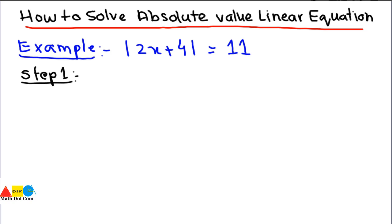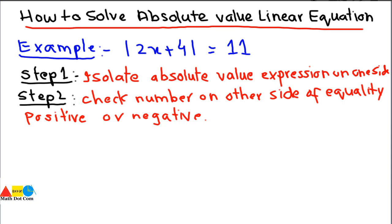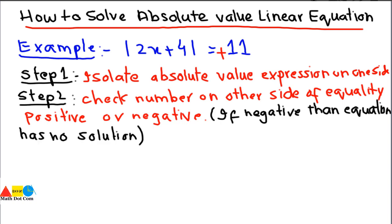In this equation it is already in this form, but you have to follow this step in every equation to get the absolute value expression on one side of the equality. Step 2 is to check if the number on the other side is negative or positive. Here it is positive, as we have +11. But if you come across a negative number, the equation has no solution, because the absolute value can never be negative.